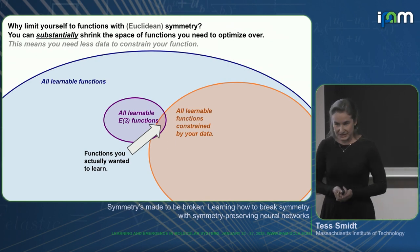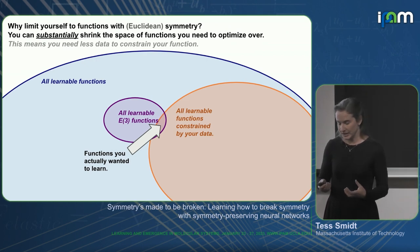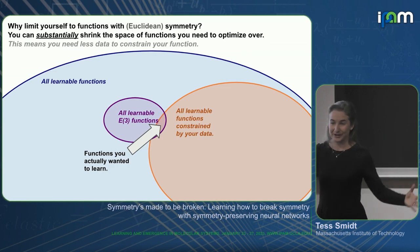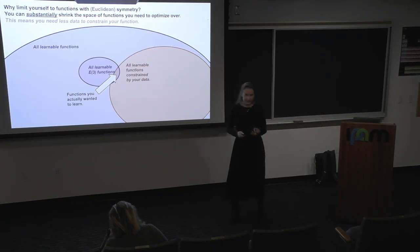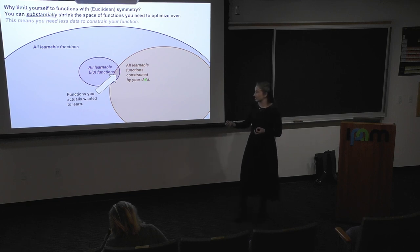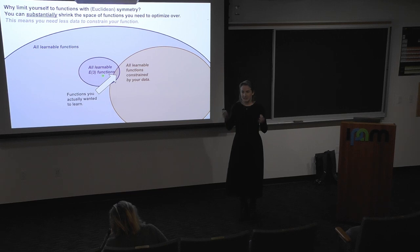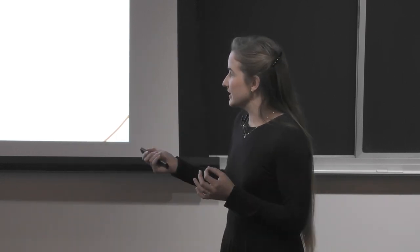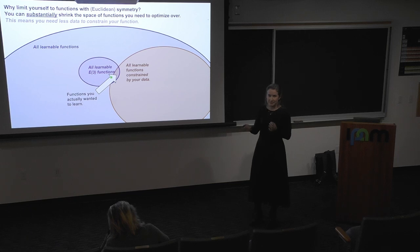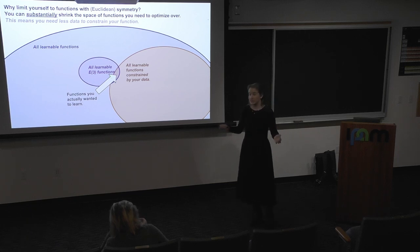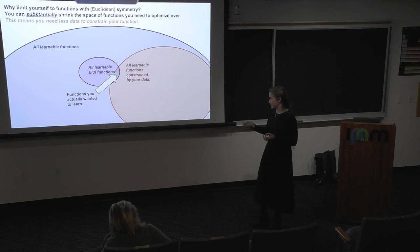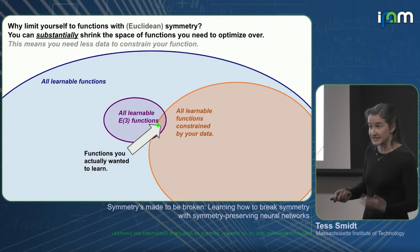Another key reason for symmetry in your model is that it makes your data much more powerful. If you consider the space of all learnable functions, that's enormous. But the set of functions equivariant under Euclidean symmetry is much smaller, so by constraining your search space, you're better able to narrow in on functions compatible with the physics you're trying to emulate. This really makes your data much more powerful, and I'll show some concrete examples of this data efficiency later.